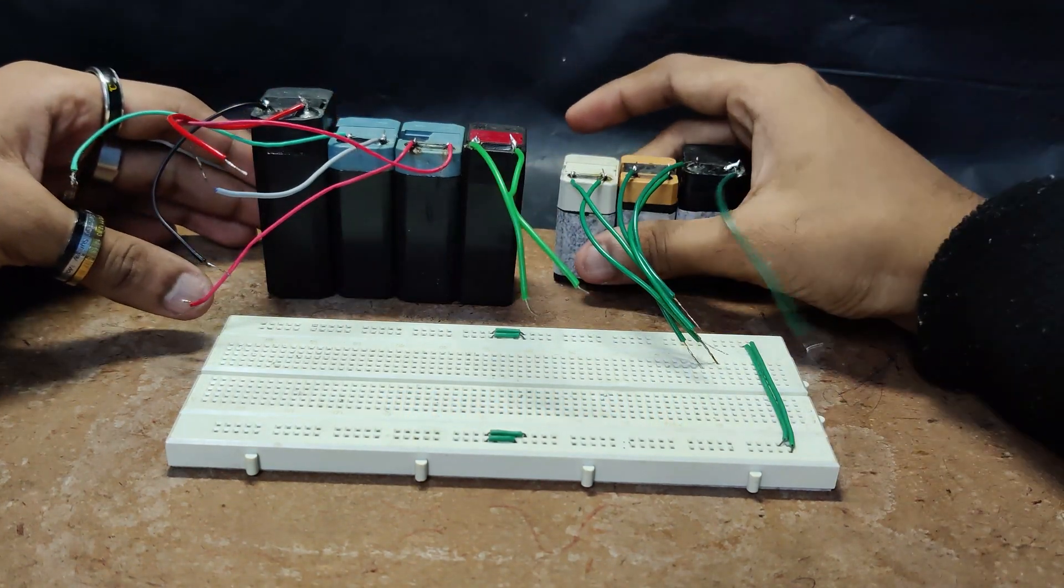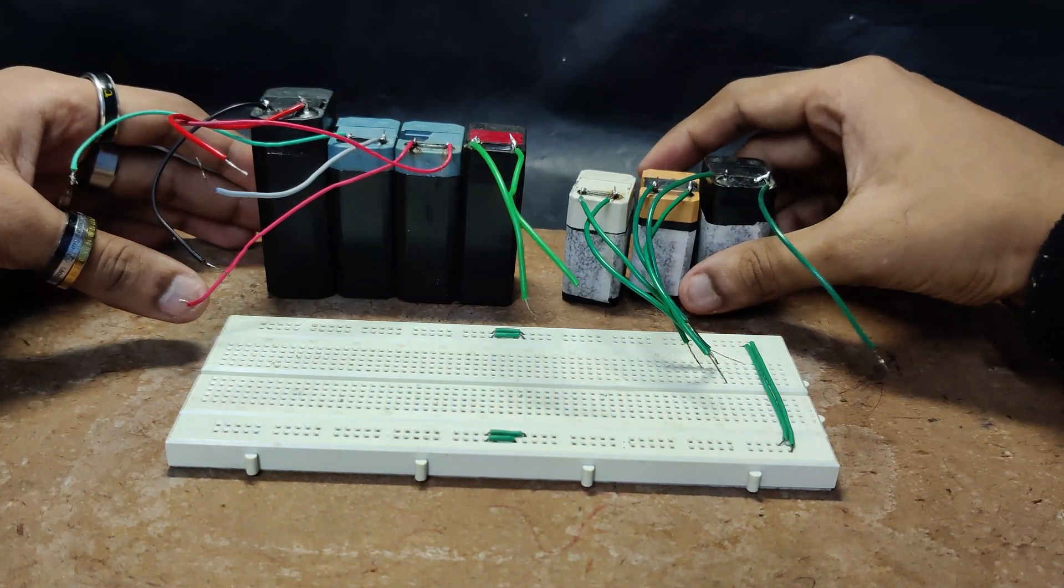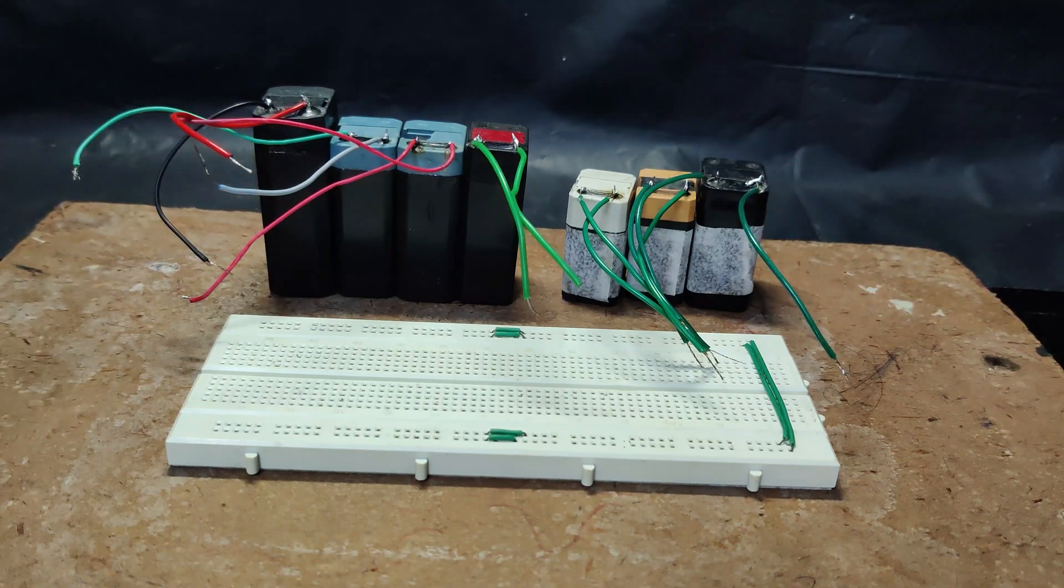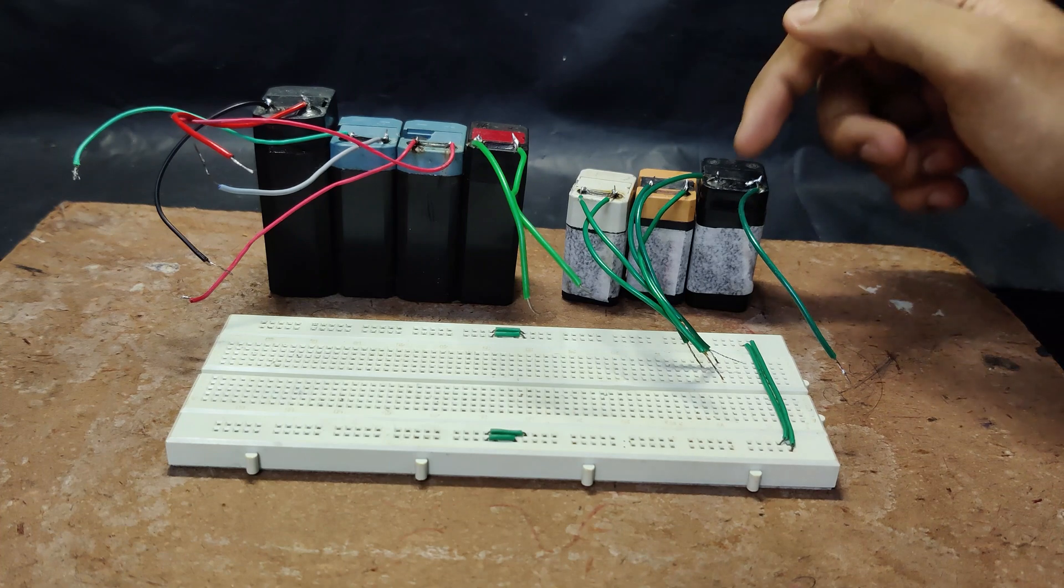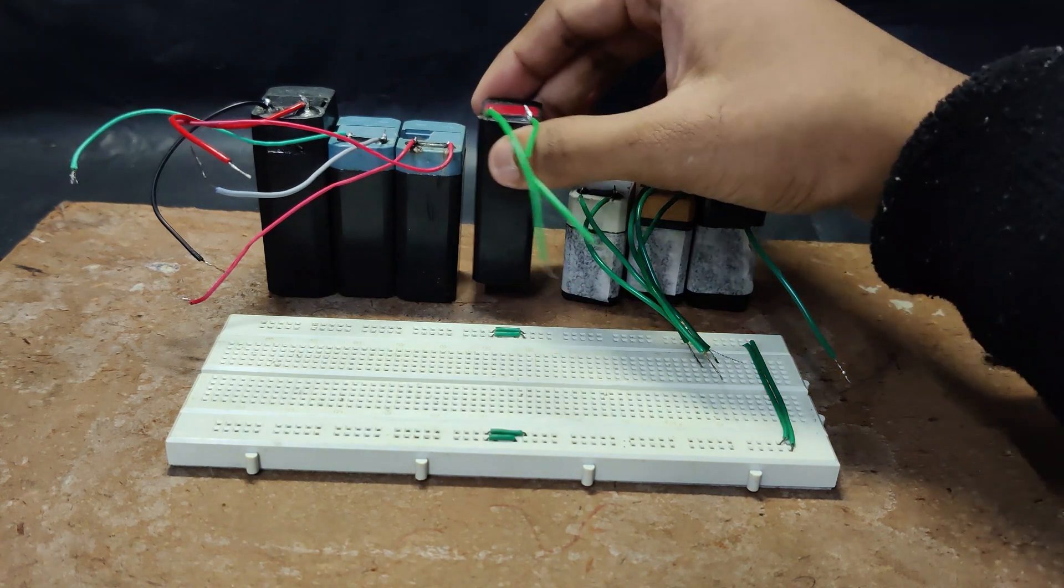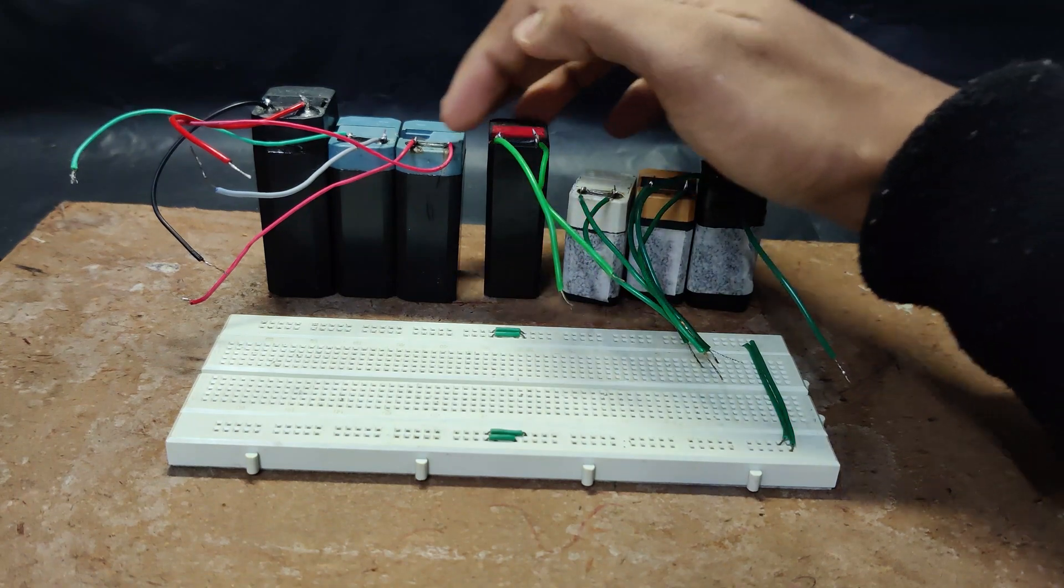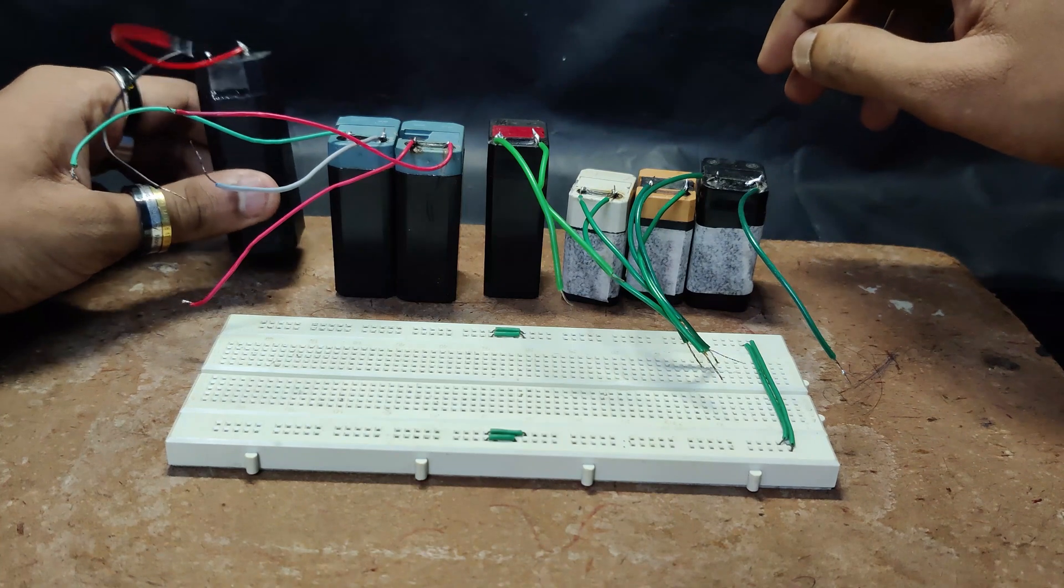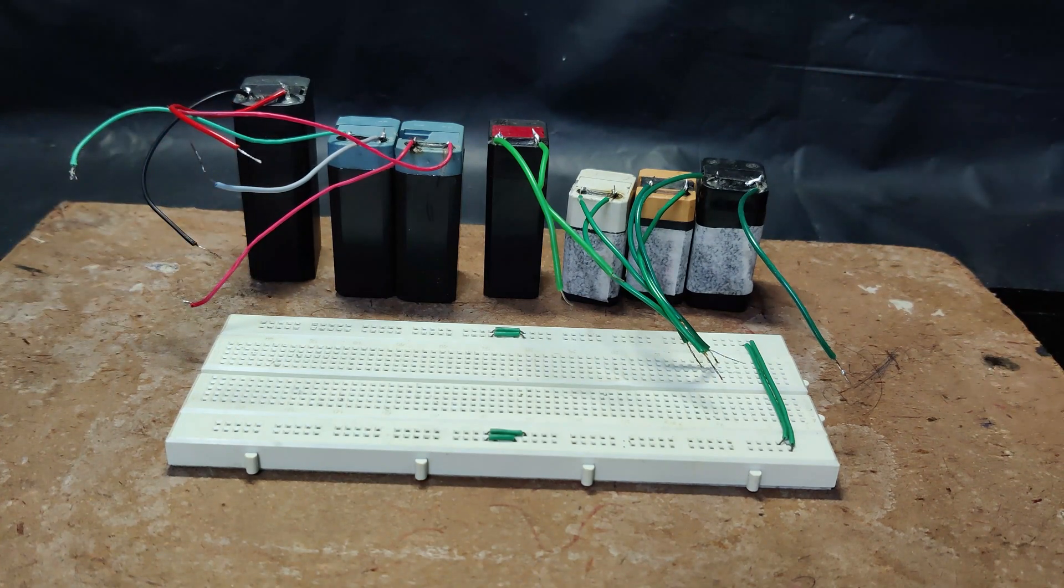Hello guys, today I will be experimenting to see whether adding distilled water can improve the capacity of the battery or not. These are seven batteries that I will be using to test this. If you are wondering where I got these batteries from, these three batteries are from mosquito bats, these three were from torches, and this was from an LED light. All these batteries are 4V.